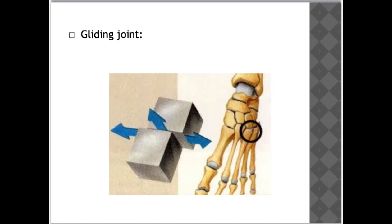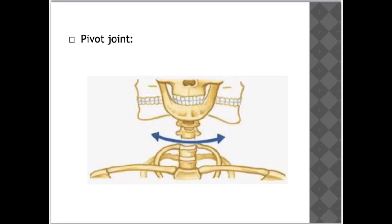A gliding joint is made up of two flat surfaces that slide across each other. This image shows two blocks which can slide in any direction across each other, so movement occurs in all directions. Gliding joints are found in the hands and feet, and you can see an example of a gliding joint in the hand here.